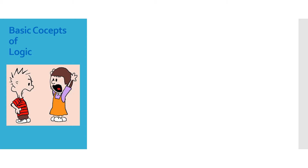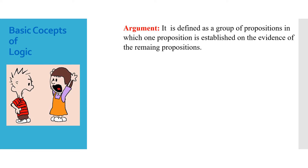So to prove your point or to establish your statement, you are saying the dress is beautiful, the dress is sober, it is of reasonable price, it will suit you, and so on. These are good reasons to prove your point. So what is an argument? An argument is nothing but reasons plus the statement which is established. It is defined as a group of propositions in which one proposition is established on the evidence of the remaining propositions.